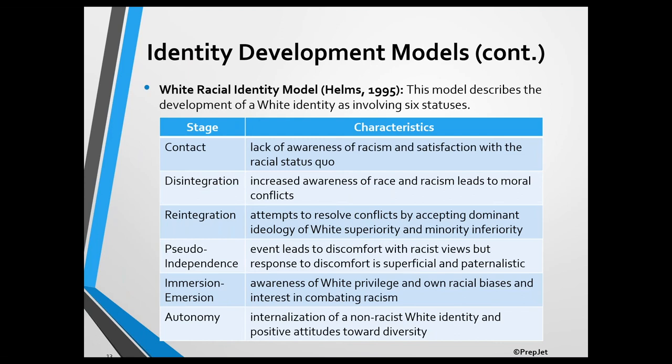People transition to the disintegration status when they become aware of contradictions that create race-related moral conflicts — for example, a conflict between the belief that all people are created equal and their unwillingness to live in an integrated neighborhood. These dilemmas cause confusion and anxiety. People in the reintegration status have attempted to resolve their conflicts by believing that whites are superior to minority group members and blaming minority group members for their own problems.